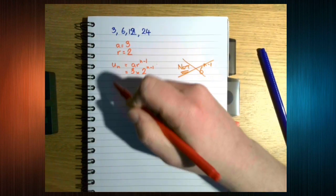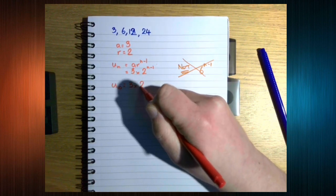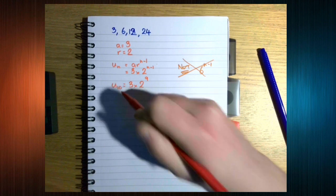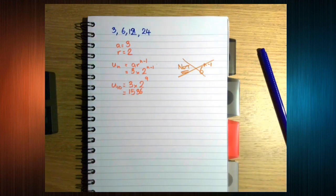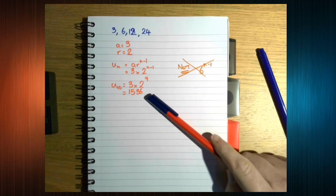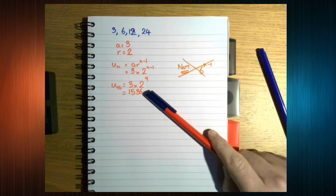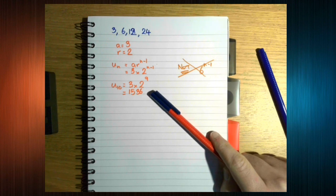So the 10th term, for instance, is going to be 3 times 2 to the 9th, which comes out as 1,536. Now the thing with geometric sequences and geometric series, because we've got this idea of multiplying by a number, often the numbers we get are going to be much, much bigger than those for arithmetic sequences and arithmetic series. Don't panic. That's just the way it is.